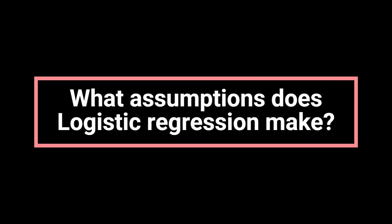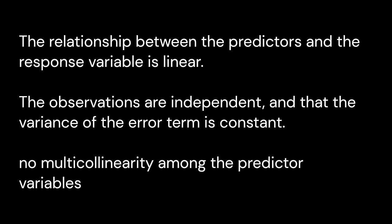What assumptions does logistic regression make? Logistic regression assumes that the relationship between the predictors and the response variable is linear on the logit scale, that the observations are independent, and that the variance of the error term is constant. It also assumes that there is no multicollinearity among the predictor variables and that there is a large enough sample size to produce reliable estimates.